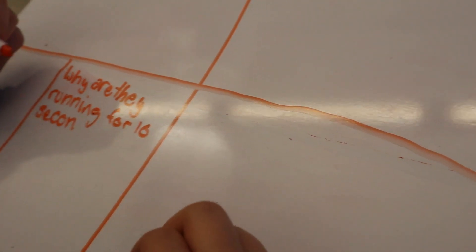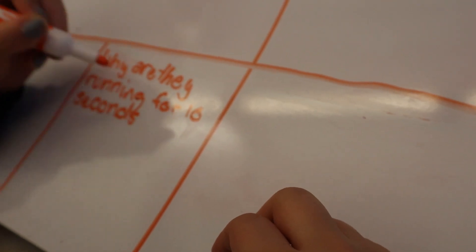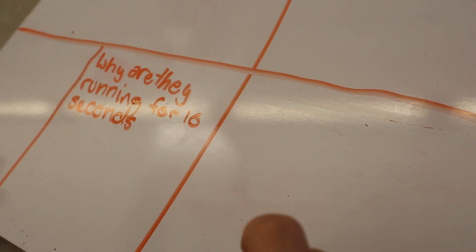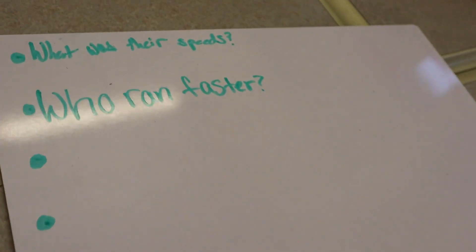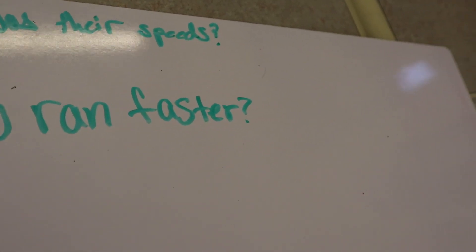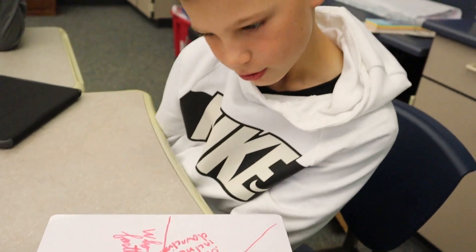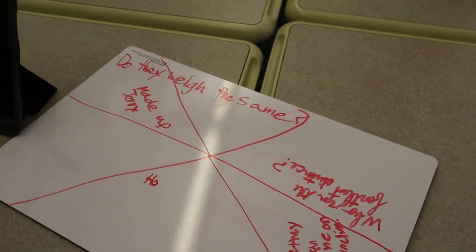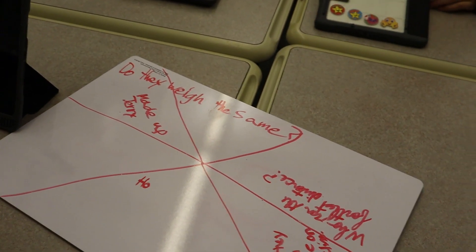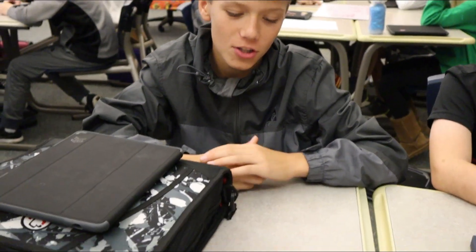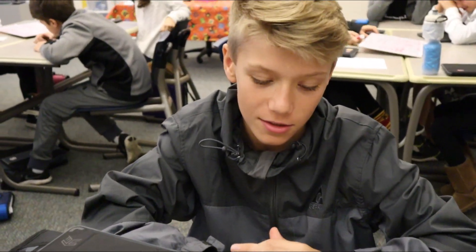What's your question? 'Why are they only running for 10 seconds?' Great question. 'What was their speed and who ran faster?' 'Do they weigh the same?' From another group: 'Are they running up an incline or a down incline?' 'Could they run longer at the same constant speed?' 'What is their constant speed?'